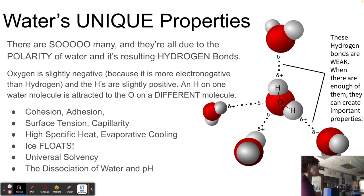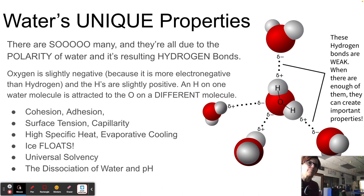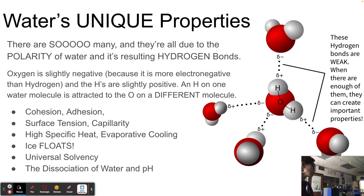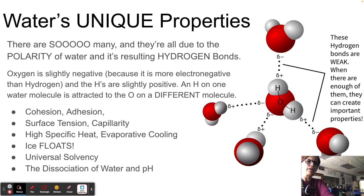The dissociation of water and pH — that's part of our next unit, solutions, acids, and bases. The idea is that water breaks into H and OH, and it's the amount of hydrogen ions that determines whether something is an acid or a base. We'll learn more about that in chemistry class.